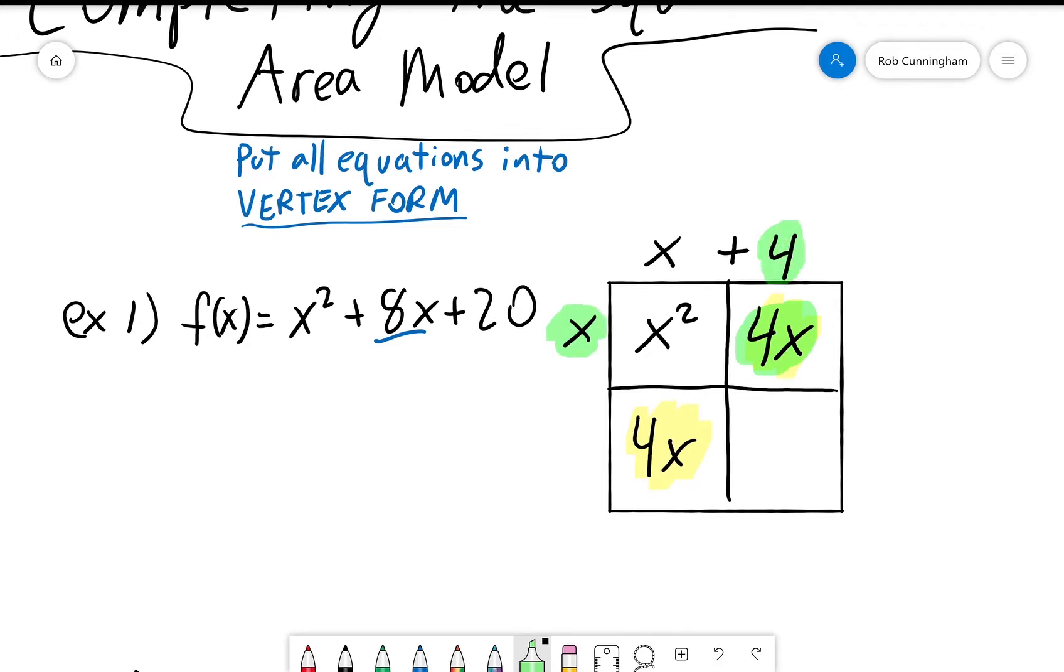Again, I'm just looking at the area of rectangles. Okay, same deal down the side. 4x divided by x is 4. So I now know at least part of my answer, part of my answer is x plus 4 times x plus 4, better known as x plus 4 squared.